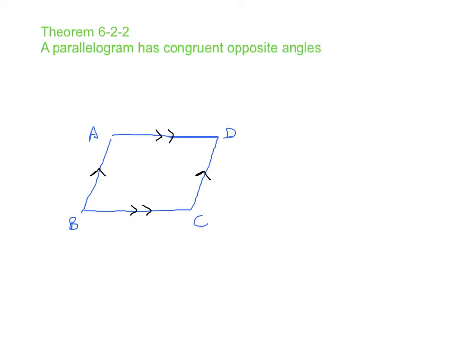Our next theorem, theorem 6-2-2, says that a parallelogram has congruent opposite angles. Now notice this theorem is very similar to our first one except the word angles is substituted for the word sides.